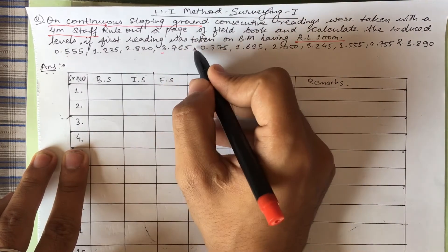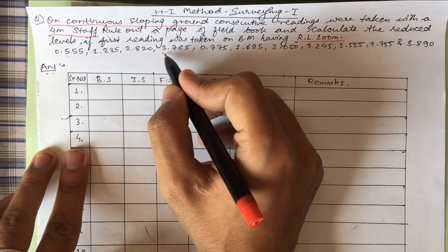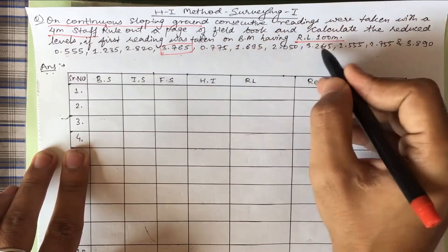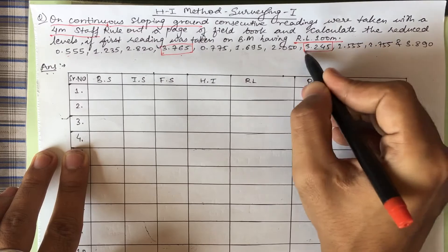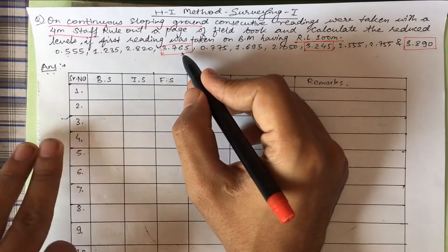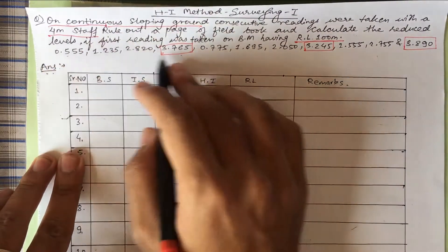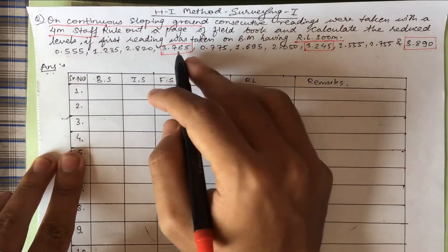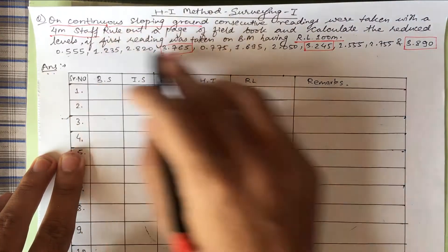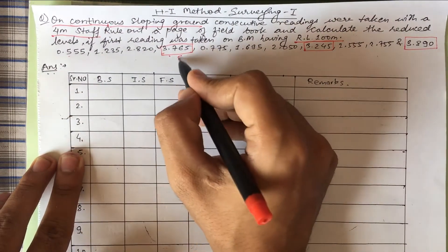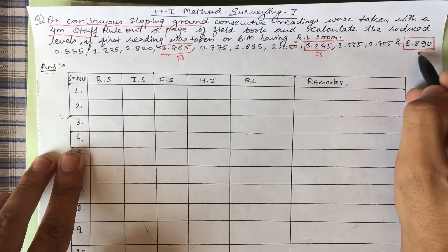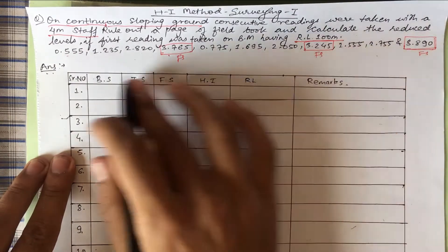This point is 3.765, another point is 3.245, and the last point is 3.890. Our point is not going above four meters. The points are lying at 3.765, less than four meters, so these points are foresight, and our last point will be foresight.